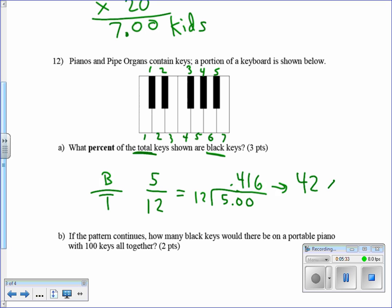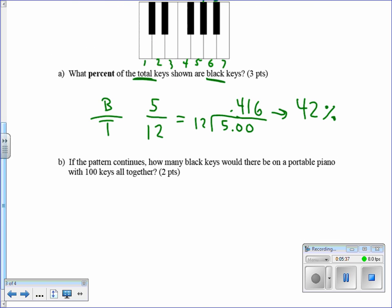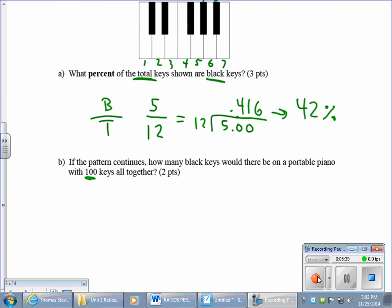Percent of course means out of 100. Hang on. If percent is already out of 100, then it means 42. There's 42 black keys out of 100 instead of 5 out of 12. No math required.